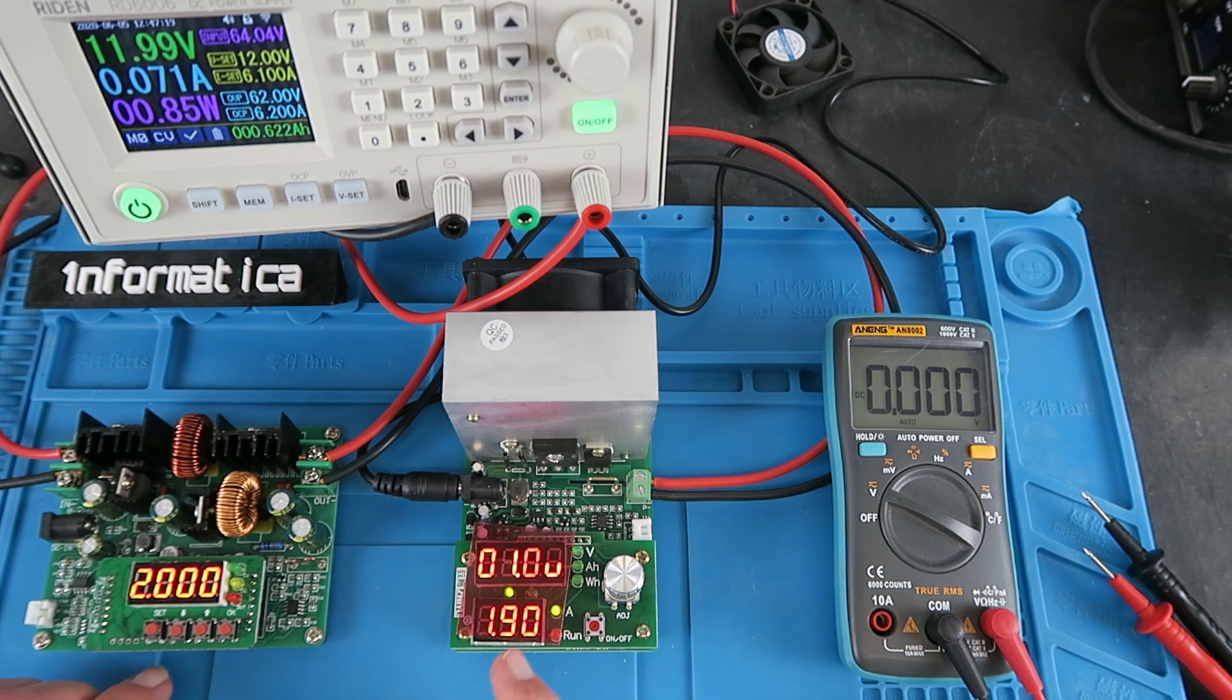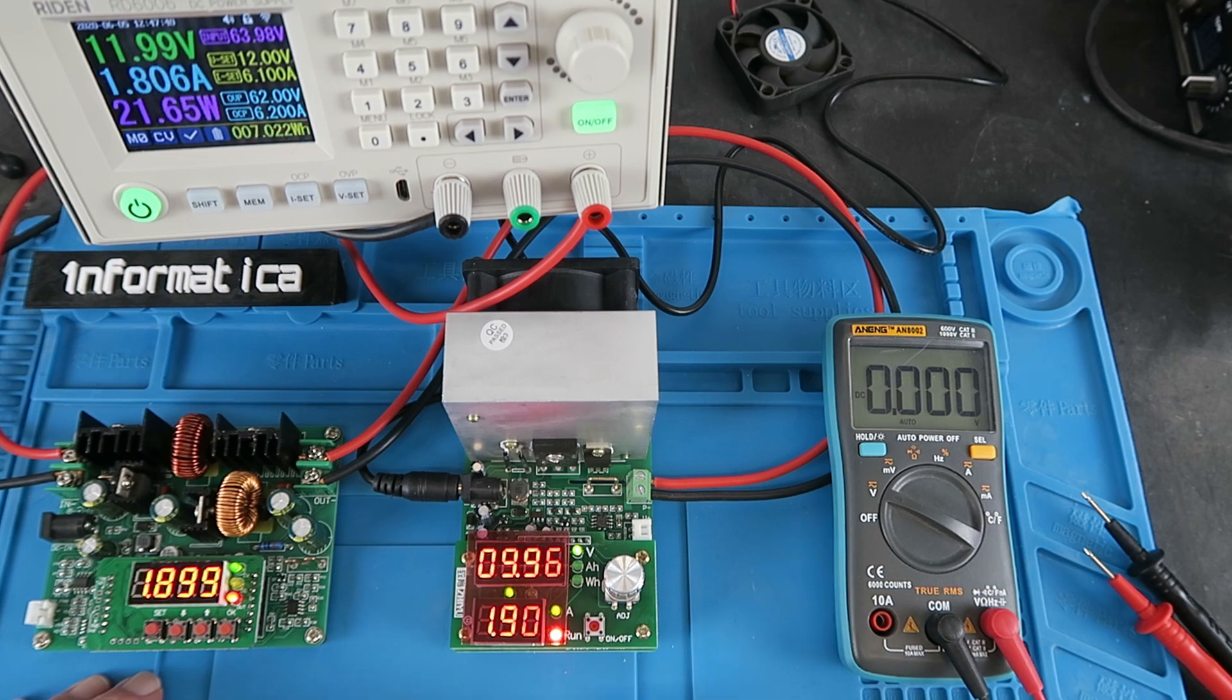On my load here, to start with, it's set to 1.9 amps. We turn on now and look at the current. Switch the load on and we can see the 10 volts and 1.9 amps.